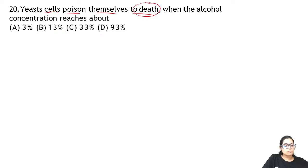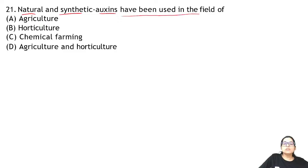Question 21: natural and synthetic auxin has been used in the field of — it is used in both agriculture as well as horticulture. Auxin is used in agriculture and in horticulture.